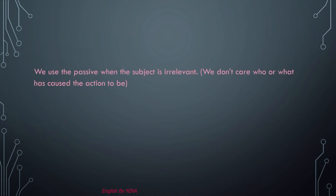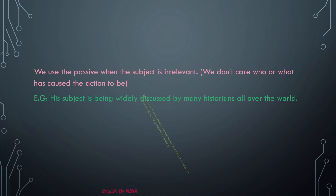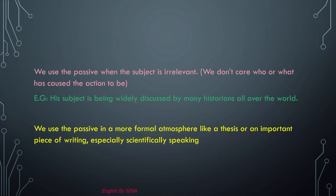We use the passive when the subject is irrelevant — we don't care who or what caused the action. For example: 'This subject is being widely discussed by many historians all over the world.' We also use the passive in more formal settings like a thesis or important piece of writing, especially scientifically — for example: 'Harmful chemicals are being thrown into the field every day.'